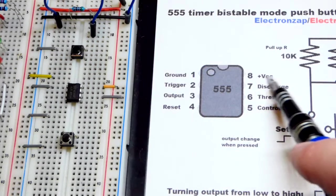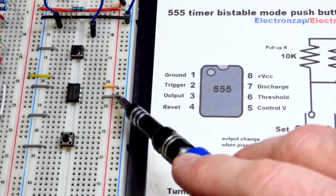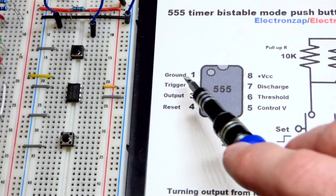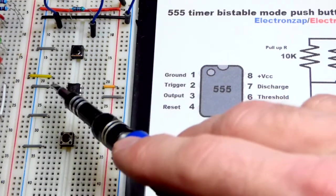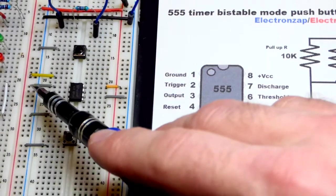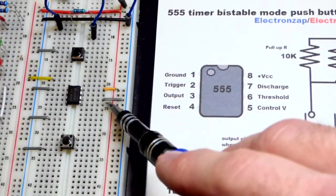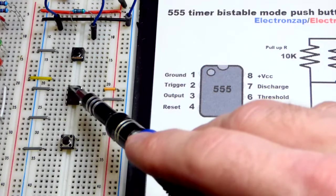The pin number 8 goes to the positive rail. We look at the positive side of the power supply there. And then pin number 1, that goes to ground right there. And right now, you can see pin 6 here.